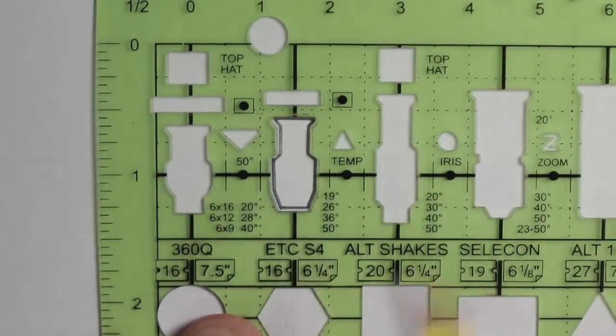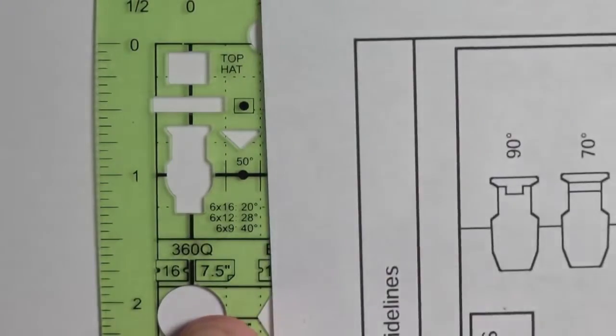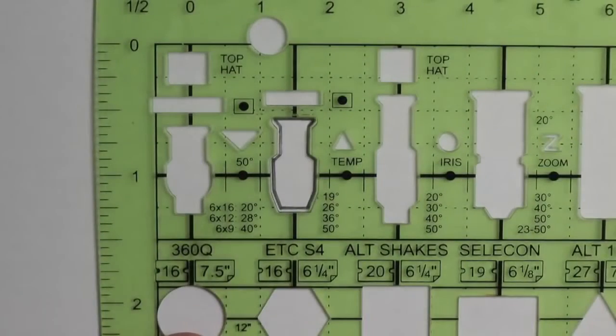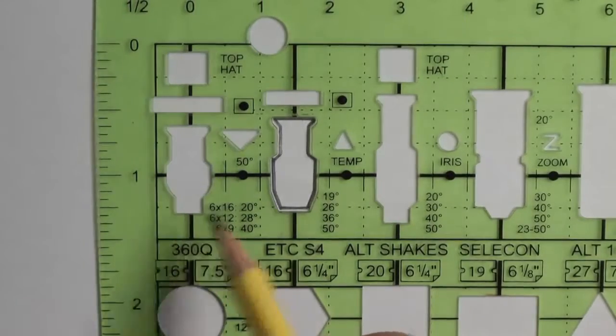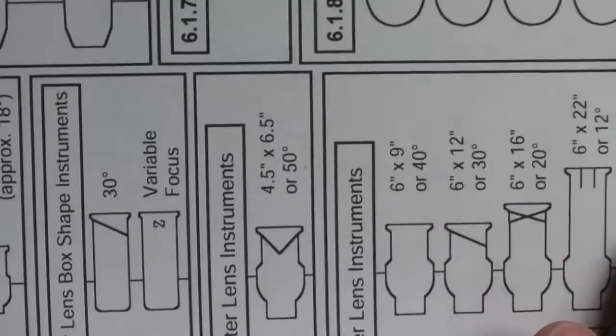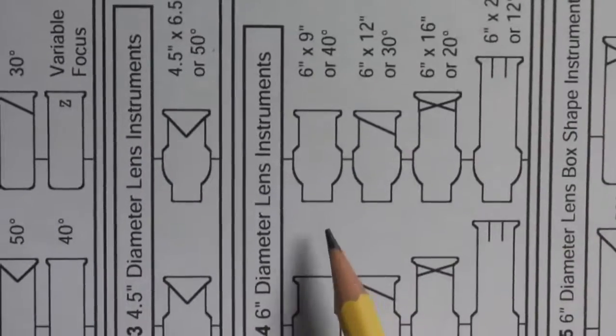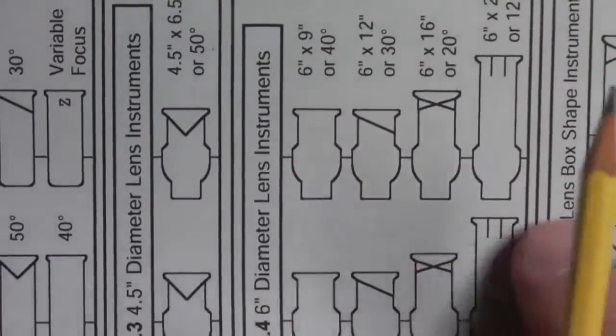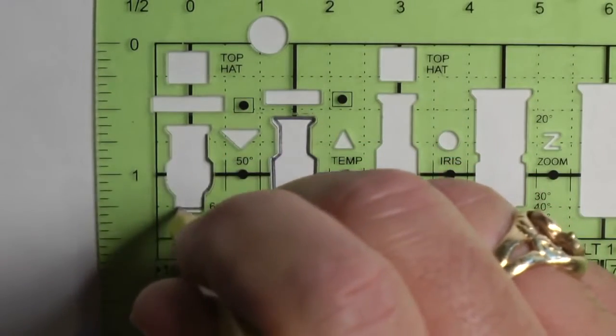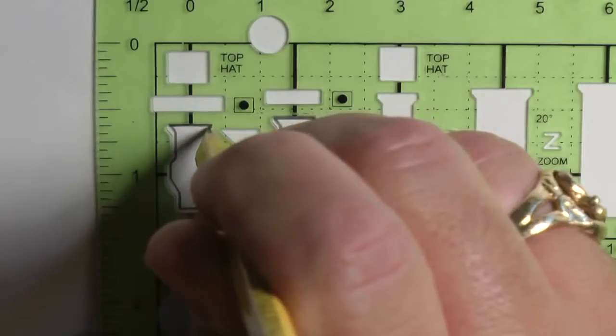This is an ETC Source 4. I've just drawn this to be this shape here. I'll draw the shape next to it, which matches this unit here, a 6 by 9, which could be an Altman actual unit.